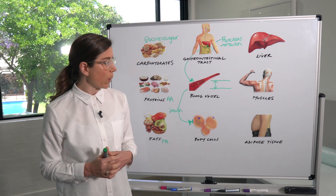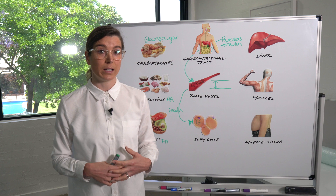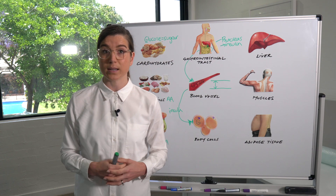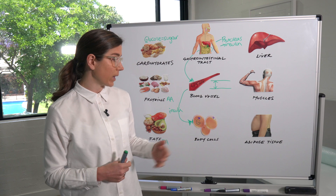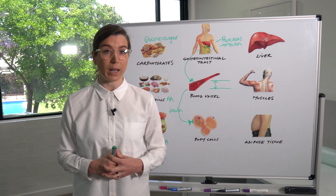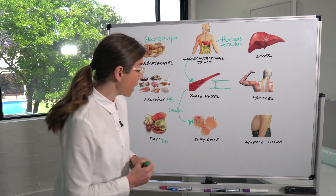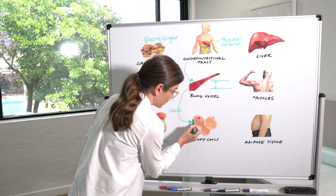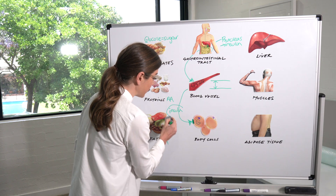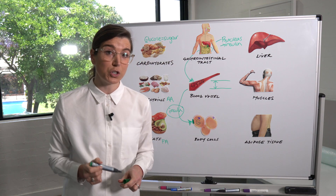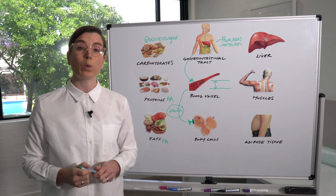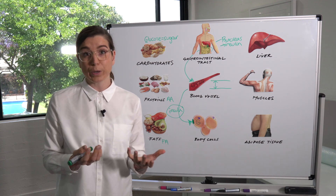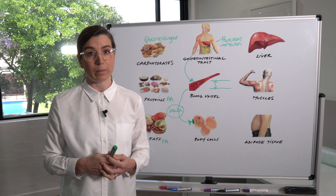Fat in abnormal places — such as the liver, the pancreas, and around the belly — acts like putty in the keyhole. It makes it really hard for insulin to work, and we call that insulin resistance, which is really at the crux of type 2 diabetes.